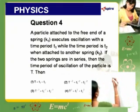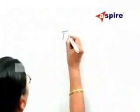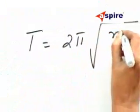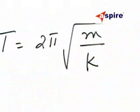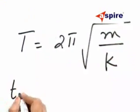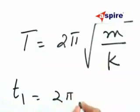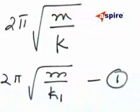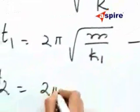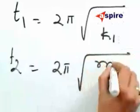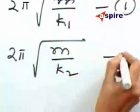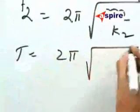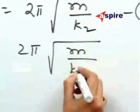First, let us write the time period of oscillation for a spring: 2π√(M/K), where M is the mass and K is the force constant. So T1 will be 2π√(M/K1), T2 will be 2π√(M/K2), and T equals 2π√(M/K_effective).